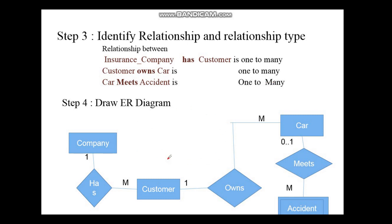Step 4 is to draw the ER Diagram using the above information. We have the company entity set, customer entity set, car entity set, and accident entity set. Reading the diagram: one company has many customers, one customer owns many cars — one customer can own many cars or just one car.